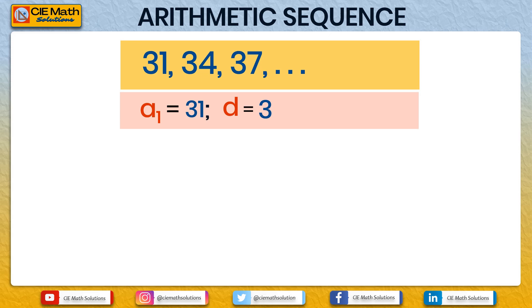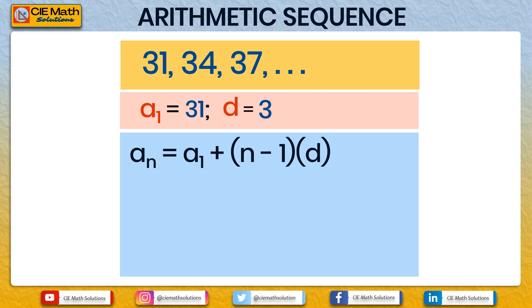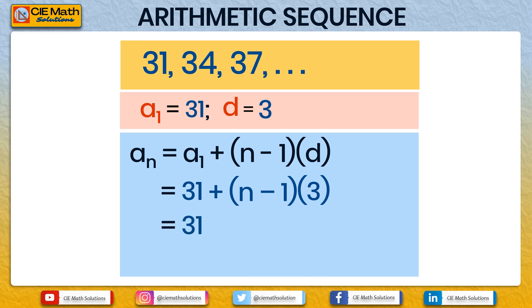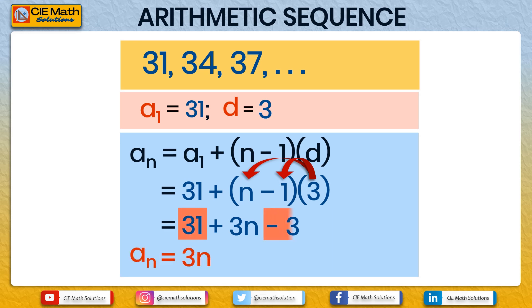Using the formula, an = a1 + (n − 1) × d, substituting a1 = 31 and d = 3, we get 31 + (n − 1) × 3. Multiplying 3 into (n − 1) gives 3n − 3. Combining like terms, 31 − 3 = 28. So the general rule is an = 3n + 28.